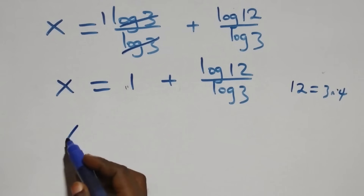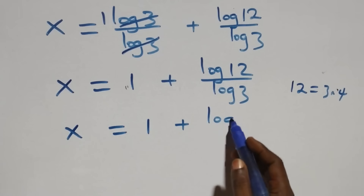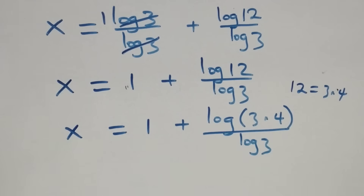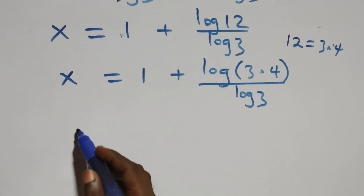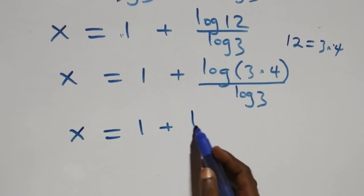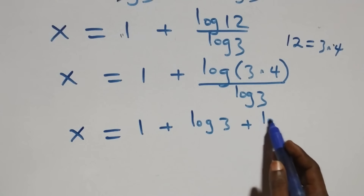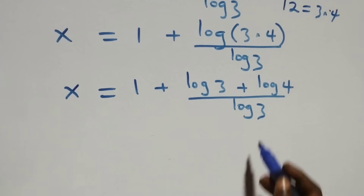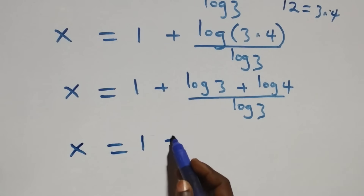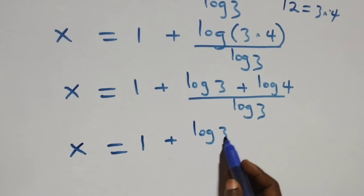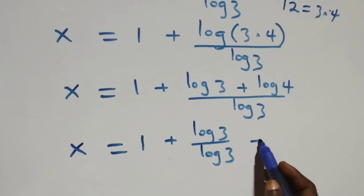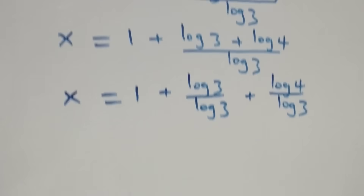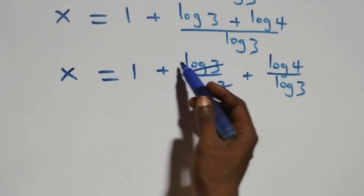We can also write 12 as 3 times 4, so x equals to 1 plus log(3 times 4) over log 3. Applying the product rule again, this becomes x equals to 1 plus (log 3 plus log 4) over log 3, and we separate into two fractions: 1 plus log 3 over log 3 plus log 4 over log 3.